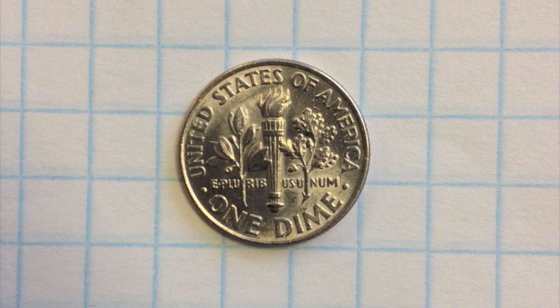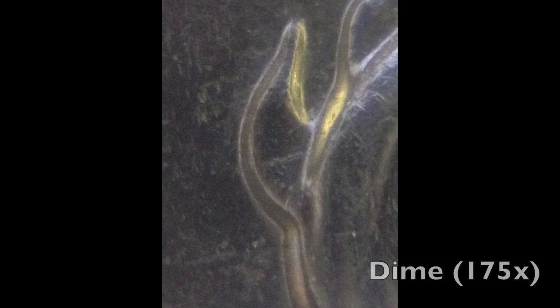Not only will this homemade microscopy stand allow you to take high-quality macro photos, but with the ability to magnify objects up to 175 times, you can see and photograph cells. At these levels of magnification, plant cells are easy to see.